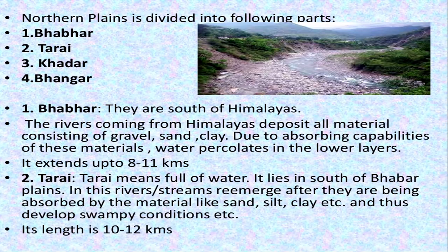Ganga, Brahmaputra and their tributaries can further be classified. Any river coming down, like the Ganga, is further divided into Bhabar, Tarai, Bhangar, and Khadar — four parts. Bhabar is the upper belt where the river enters into plains. The big boulders brought by the river are deposited here. The river may disappear during summer because water is less.